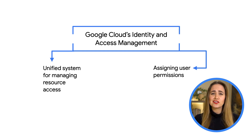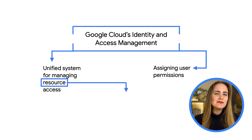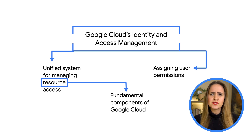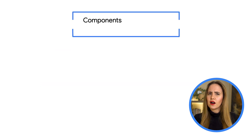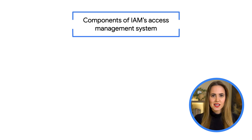Cloud IAM unifies all access and control and centralizes it into one place. Resources are the fundamental, lowest-level components that make up all Google Cloud services. Examples include Compute Engine VMs, Pub/Sub topics, Cloud Storage buckets, and App Engine instances. Cloud IAM lets organizations keep track of everything going on in their Google Cloud environment and prevent unauthorized resource access.